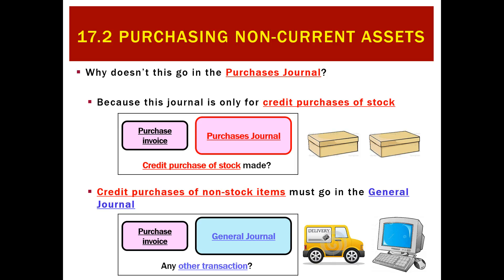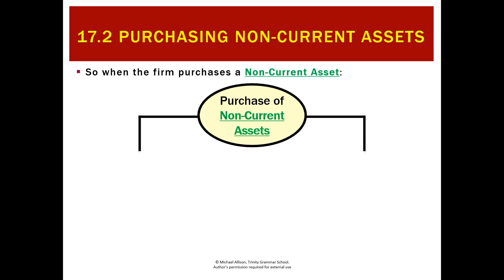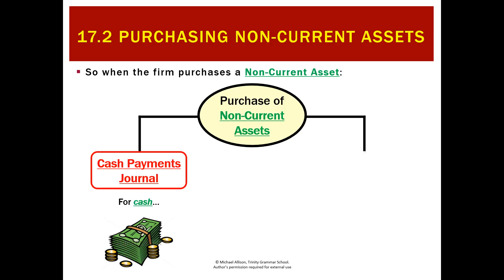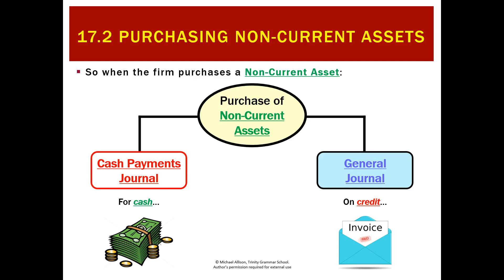In summary, when we buy non-current assets there are two ways: if we pay with cash, like all cash payments, that goes in the cash payments journal. If we buy it on credit, that is not a credit purchase of stock, so it won't go in the purchases journal — it goes in the general journal. That diagram sums up where non-current asset purchases get recorded.